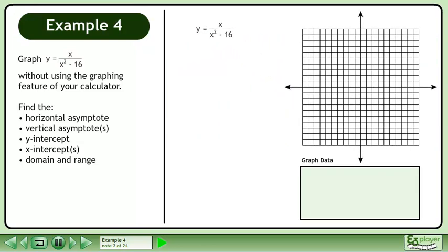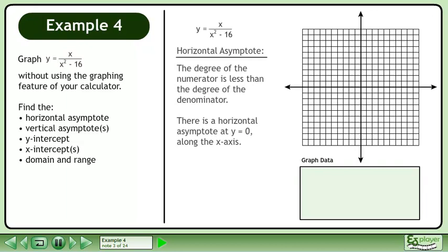We will set up the graph and create a green box to store graph data. Begin by finding the horizontal asymptote. The degree of the numerator is less than the degree of the denominator. There is a horizontal asymptote at y equals 0 along the x-axis. Draw the horizontal asymptote along the x-axis.